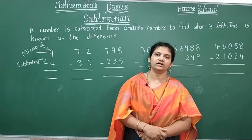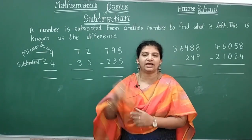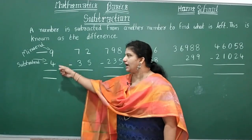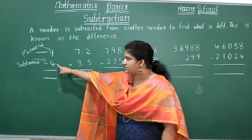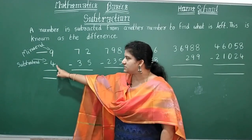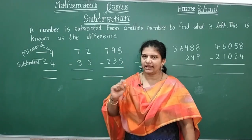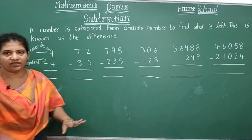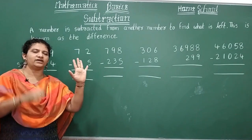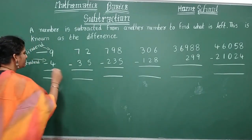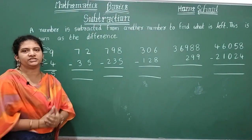Now, how do you read a subtraction problem? For example, subtract four from nine — not nine from four. You say the subtrahend first: subtract four from nine. Using your fingers: show nine fingers, subtract four fingers, and how many are left? Five. That is the difference.